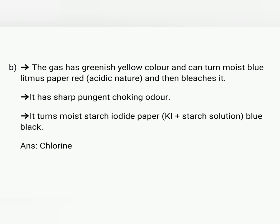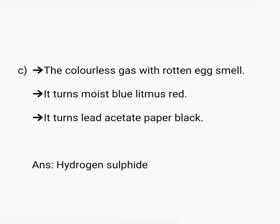The gas has a greenish-yellow color, a sharp pungent choking odor, and turns moist starch iodide paper blue-black. Answer: chlorine. Next, the colorless gas with a rotten egg smell turns moist blue litmus red and turns lead acetate paper black. Answer: hydrogen sulfide (H2S).